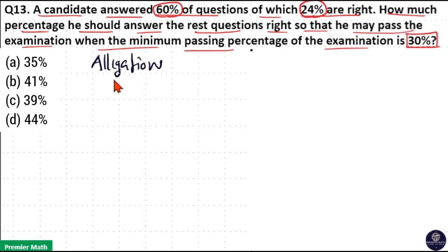Let's use the allegation method. Here, 60% of questions he answered and the remaining 40% are unanswered. Out of this 60%, he got 24% correct. So in order to get 30% overall, he should correct x% out of the remaining 40 questions.